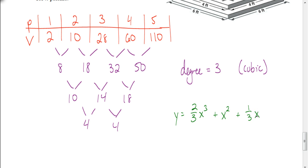Now if we wanted to use this equation — where x represents the number of prisms or steps — and we wanted to have 10 steps, we just put 10 in for x to figure out how many cubic feet of concrete we'd need. This is really helpful in construction because you don't want to order too much or too little. That's all we need to know for this lesson. Good luck as you work on your assignment.